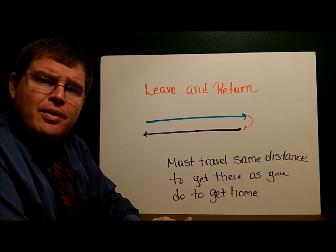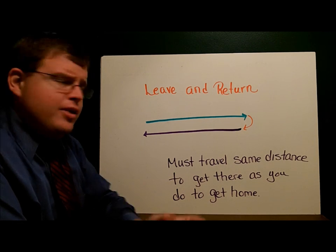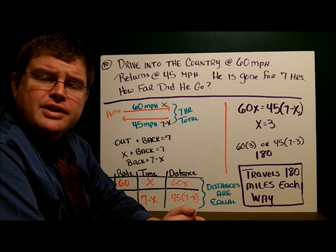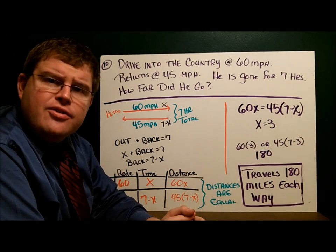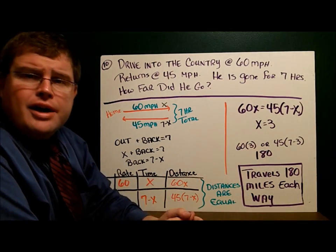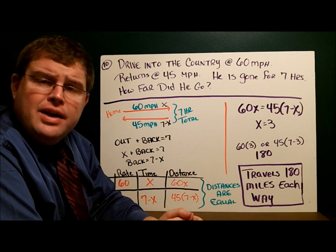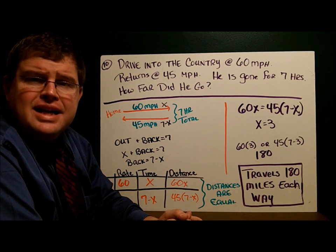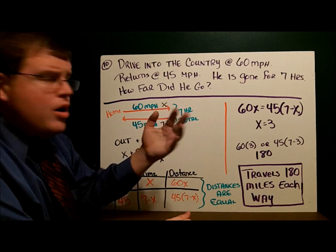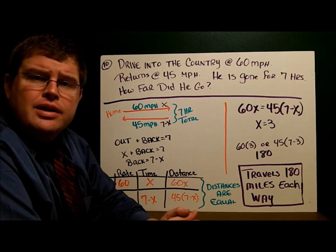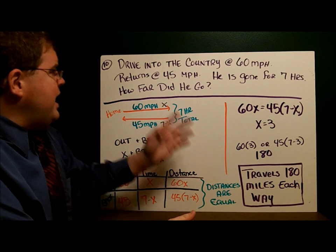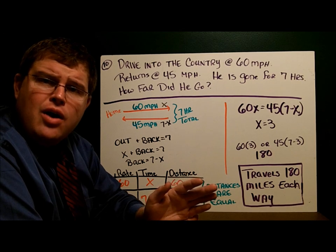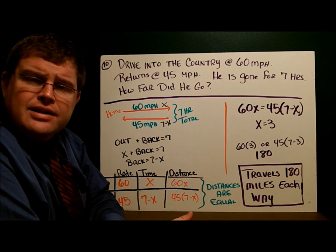Example 10 says we drive into the country. A little old man drives into the country, leaves home going 60 miles per hour down the highway. He drives for a while, then turns around and comes home. But he's a little more tired and decides to take his time - instead of going 60 miles per hour home, he goes a bit slower, 45. He's looking at the leaves, enjoying the foliage. If he was gone for a total of 7 hours, how far did he go into the country?